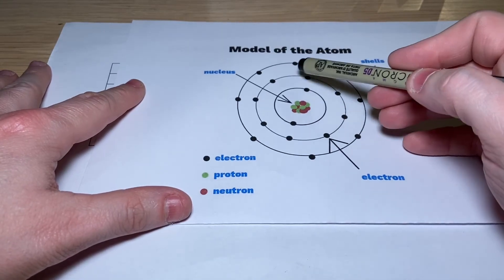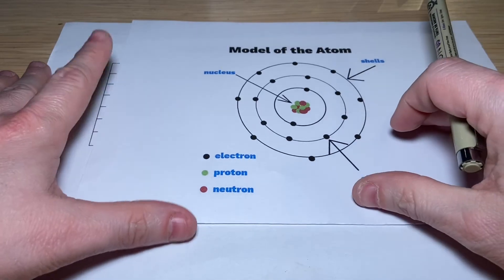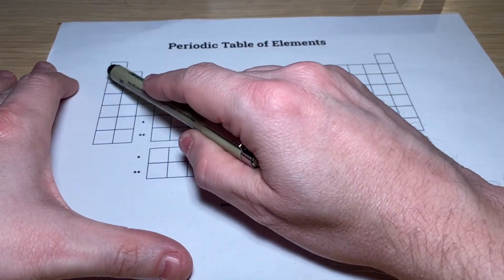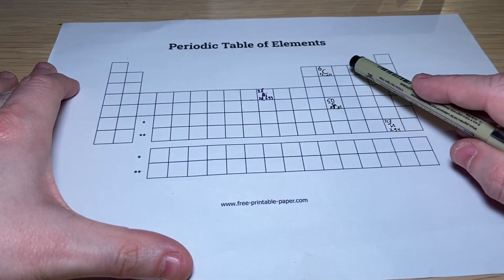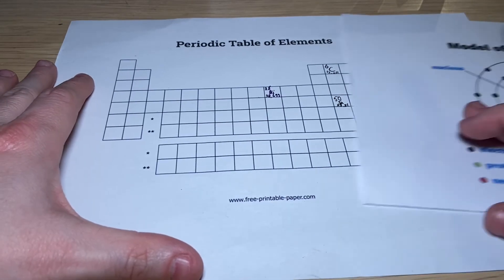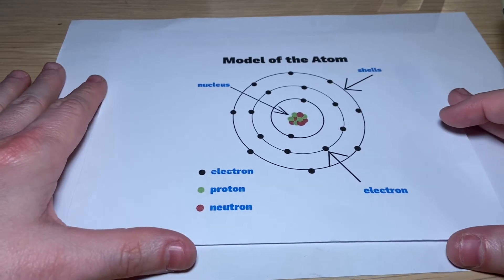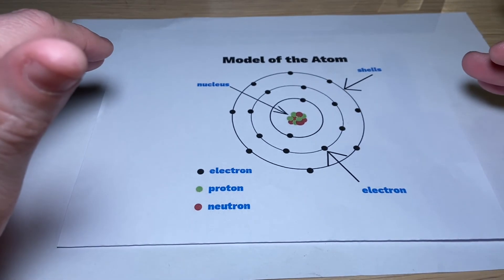Now, the second shell, it has one, two, three, four, five, six, seven, eight electrons. Now, if you look here and you count the second row, one, two, three, four, five, six, seven, eight. Hmm, that's a coincidence. Now, if you picture, and I'm using an analogy here, if you picture these shells as shelves in a bookcase, you can use the following analogy.